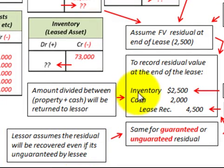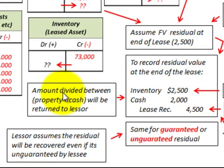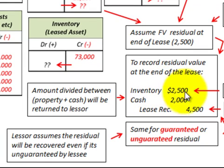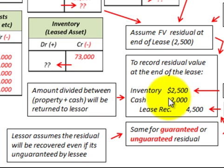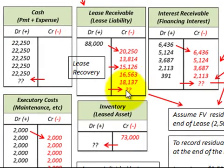The initial estimated lease receivable of $4,500 is assumed to be recovered, divided between property returned and cash paid by the lessee to the lessor. For example, if the fair value were $3,000 instead, inventory would be debited for $3,000 and cash would be debited for $1,500, with the lease receivable of $4,500 credited as the balancing amount. That's how we account for the residual at end of lease — the lease receivable, cash account, and inventory account.